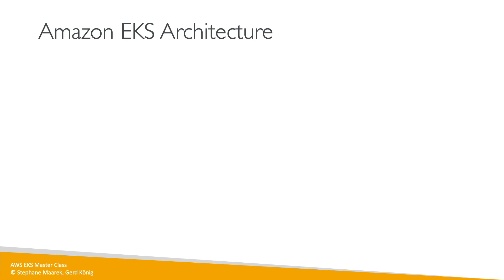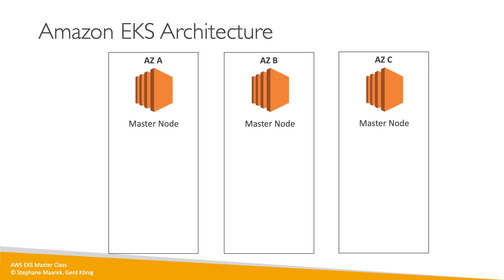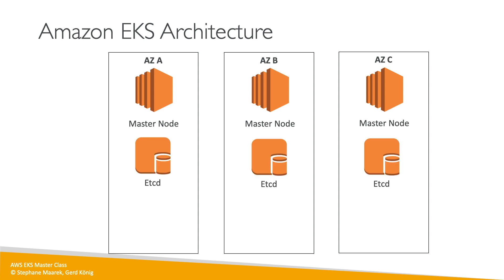If we look at a Kubernetes architecture, we usually want something to be distributed across three availability zones to maintain high availability. If you were to deploy a Kubernetes cluster on your own, you would have to deploy master nodes usually on EC2 instances in three AZs and manage them. For Kubernetes to work properly you also need etcd running — at least three etcd instances, one in each AZ, to give you high availability.